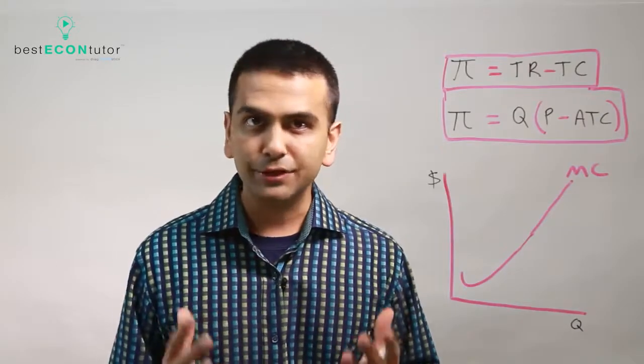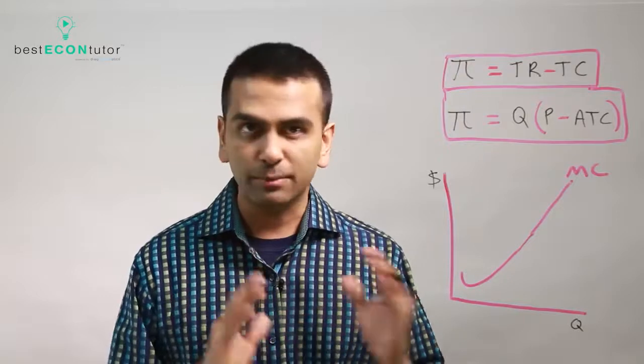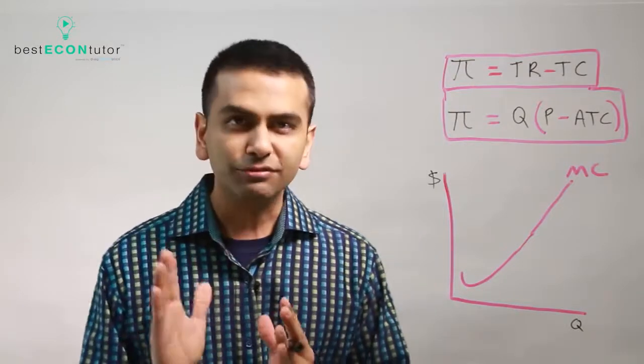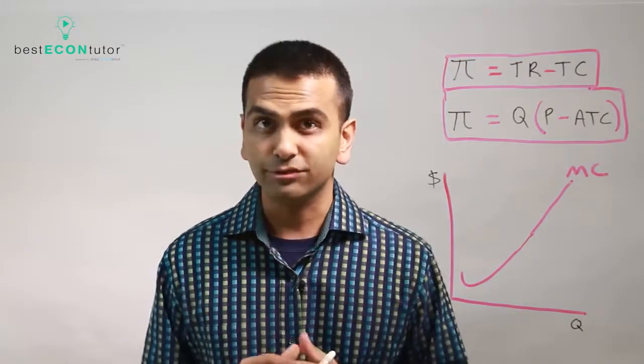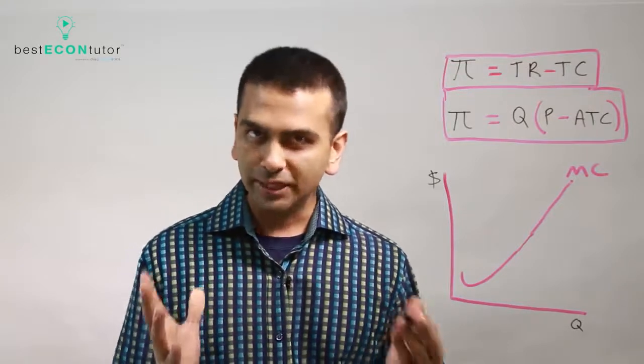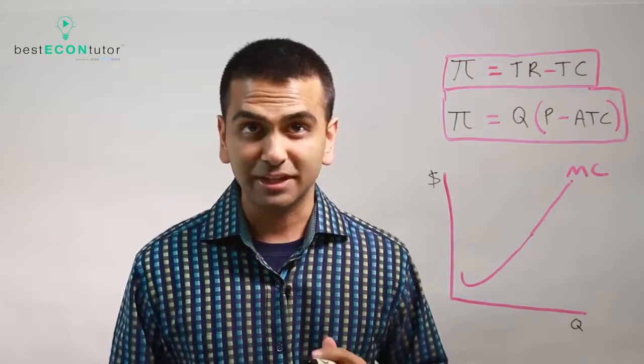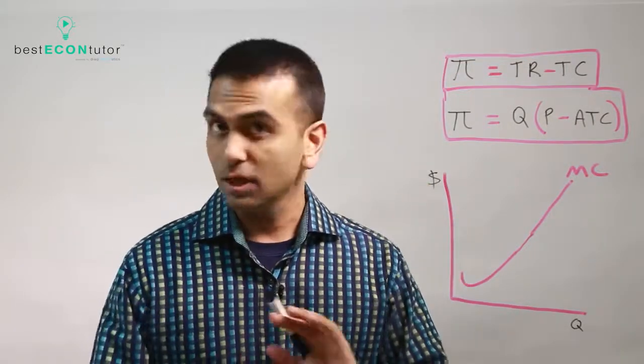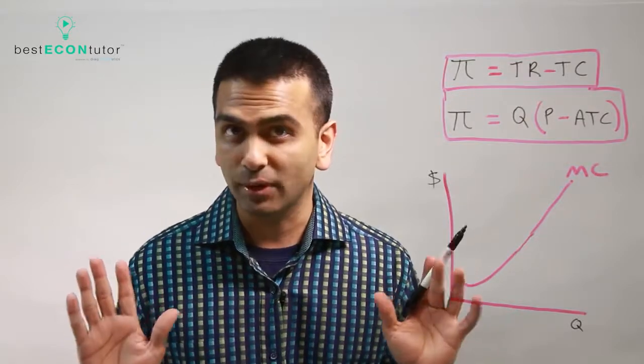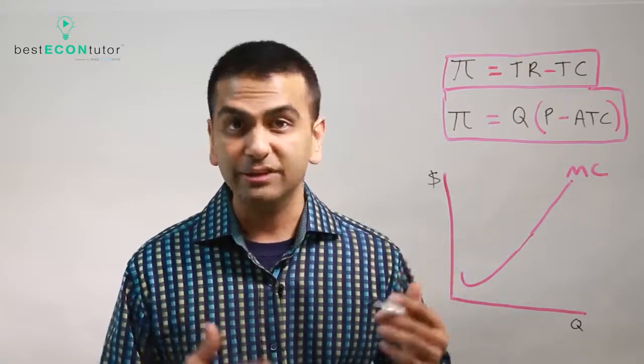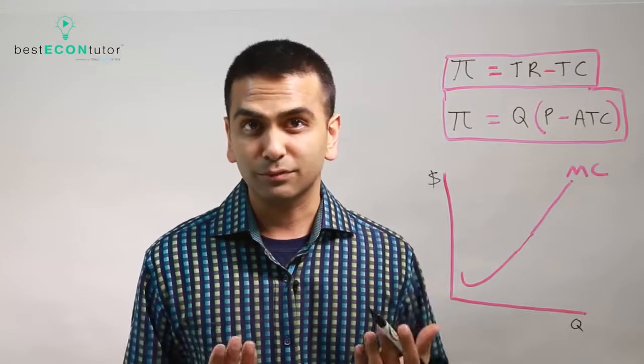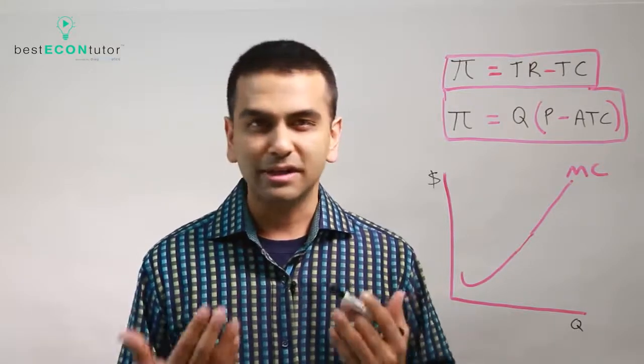So now for the question, how do you maximize profits if you're in a perfectly competitive market? Let's first talk about what profits actually are. Now the notation for profits usually in economics is π. No relation at all to 3.14. The reason we use π instead of P is because we're already using P for price. So now there's no confusion.